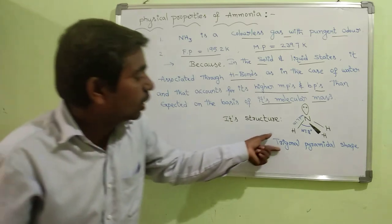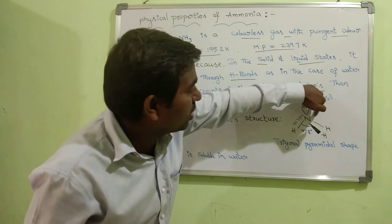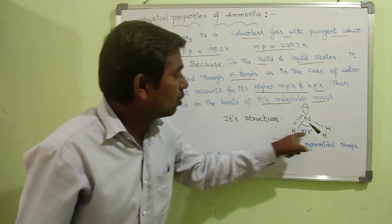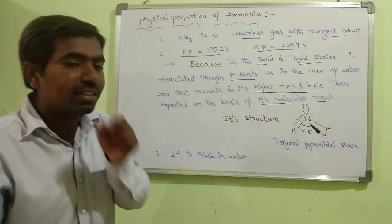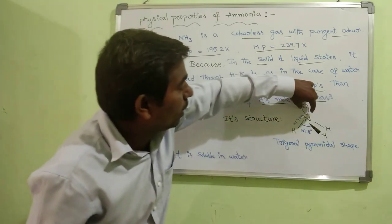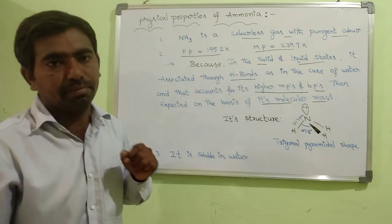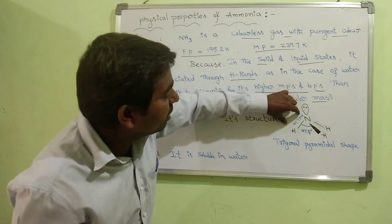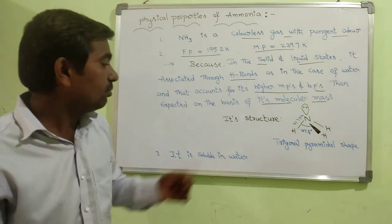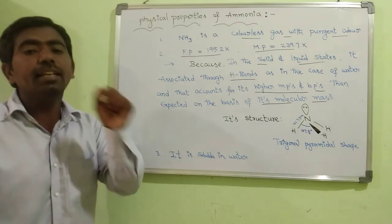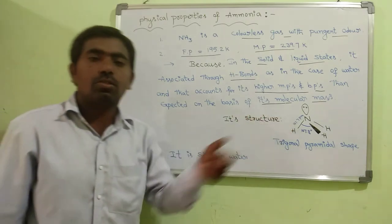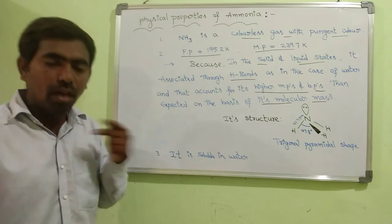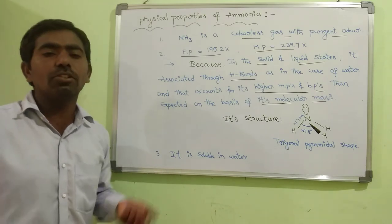Its structure is trigonal pyramidal in shape. Nitrogen is the central atom, with three hydrogen atoms bonded through single bonds. At the central atom, there is one lone pair of electrons. The bond angle is 107.8° and the bond length is 101.7 picometers. Ammonia is also easily soluble in water. These are the physical properties of ammonia.